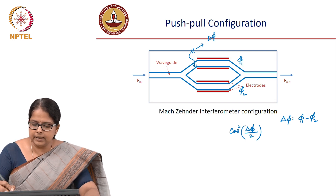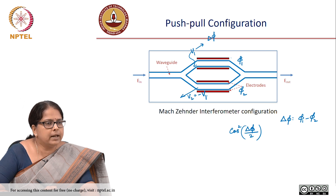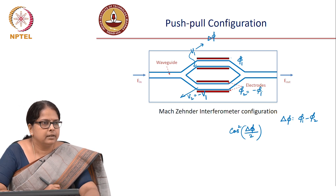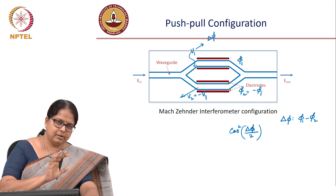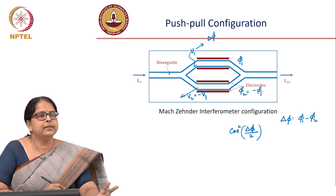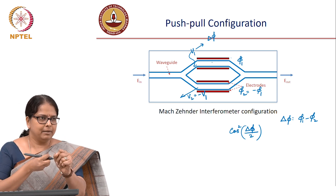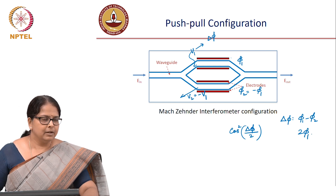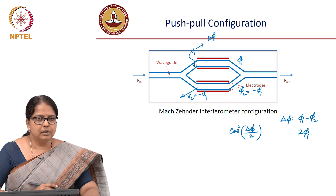Now, what if I apply a voltage V1 in one arm and V2 equal to minus V1 in the other arm? Then I get φ1 in one arm and φ2 equal to minus φ1 in the other. The electro-optic effect is a linear effect, so applying a negative voltage gives a negative phase — both phase advancement and phase delay are possible. The benefit of this configuration is that you require only half the voltage to get a phase shift of π compared to the previous configuration. One arm is pushed by φ1, the other by negative φ1, so the net phase difference becomes 2φ1. Earlier you had to apply a certain voltage to get φ1; now you only need half that voltage.